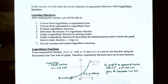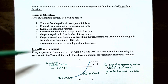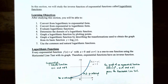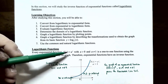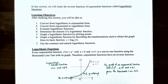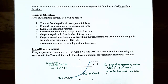Every exponential function f(x) = a^x, where the base must be greater than zero but not equal to one, is a one-to-one function if you use the horizontal line test. You can verify this: any horizontal line will cross the graph of an exponential function no more than one time. Therefore, exponential functions do have an inverse function.